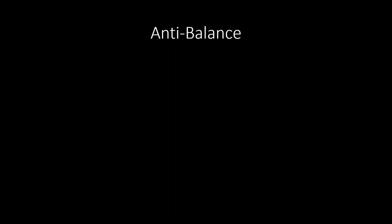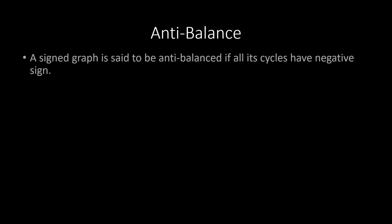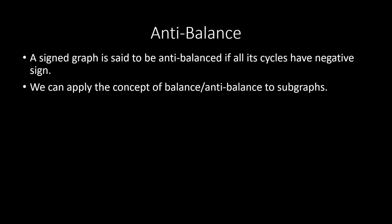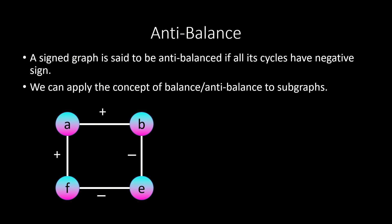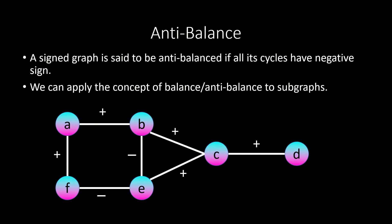Interestingly, we can also define a similar property called anti-balance, for when all cycles in a graph have a negative sign. The concepts of balance and anti-balance also apply to subgraphs of signed graphs. For example, in this graph we have a balanced subgraph induced by vertices a, b, f, and e — even though the graph itself is not balanced, because it contains a negative cycle b, c, e.